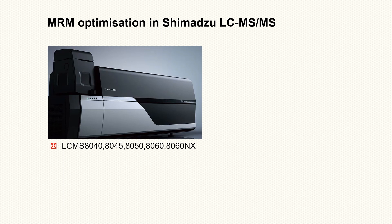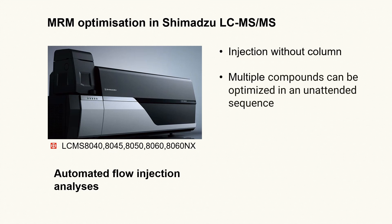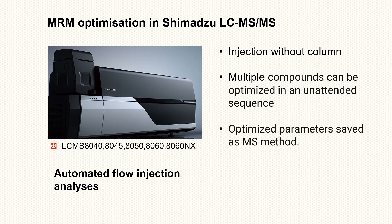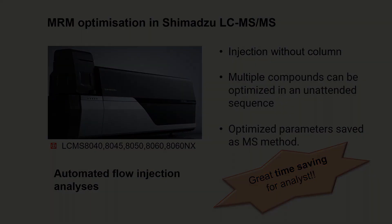MRM optimization can be time-consuming, especially when setting up a multi-analyte analysis method. MRM optimization in Shimadzu LC-MS systems is based on a rapid series of automated flow injection analyses, requiring only minutes to perform. Multiple compounds can be optimized in an unattended sequence, and the optimized parameters will be saved as an MS method, freeing the analyst from tedious work.